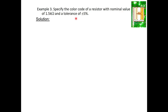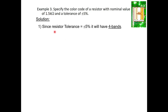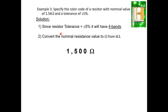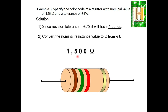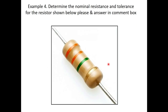Example 3: Specify the color code for a resistor with a nominal value of 1.5kΩ and ±5% tolerance. Since tolerance is ±5%, it is a four-band resistor. Convert 1.5k to 1500 ohms: brown (1), green (5), red (10² multiplier for two zeros), and gold (±5% tolerance). Color code: Brown, Green, Red, Gold.